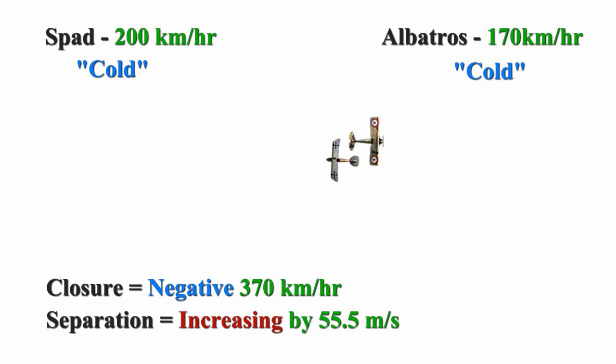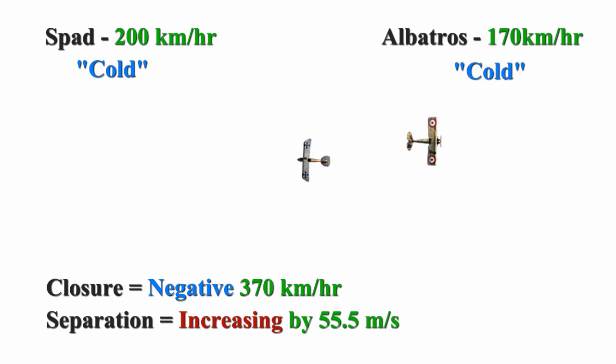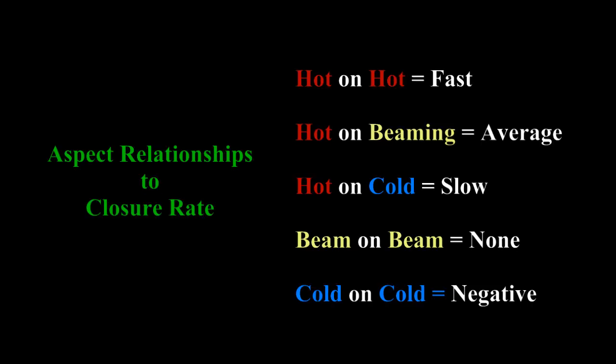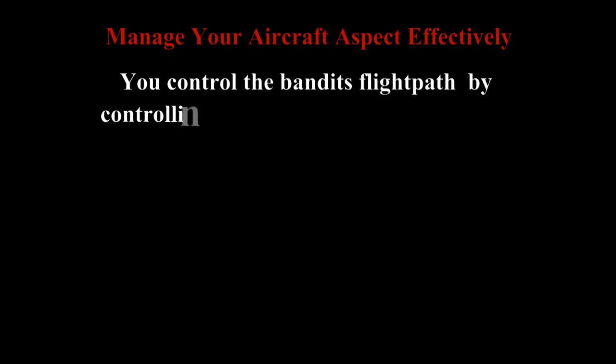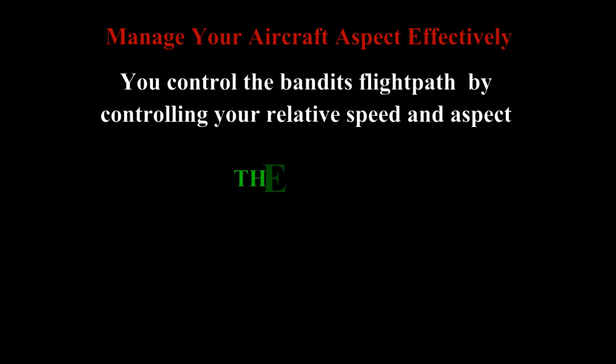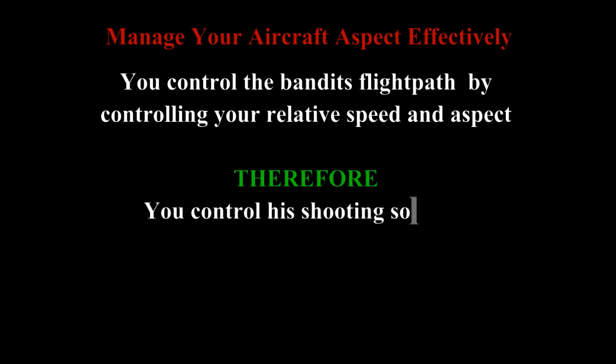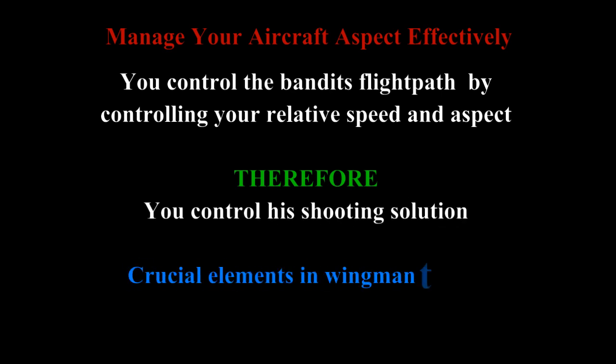Now that they have both passed each other, the separation is increasing at a negative closure rate. Here are the relationships between the aspect and the closure rate. By managing your aspect, you can effectively control the bandit's flight path and what shooting solution he has on you. This is important to understand and implement when you're doing wingman tactics.